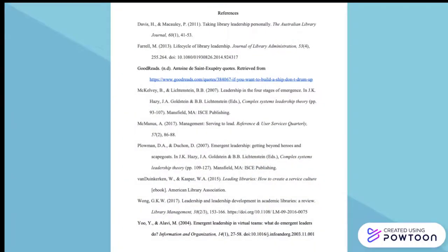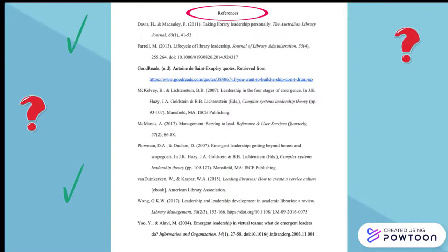Backward citation chaining involves reviewing your perfect article's reference list and investigating those sources. This is done to learn about what has been previously said about a topic and to identify the key works related to your area of study.